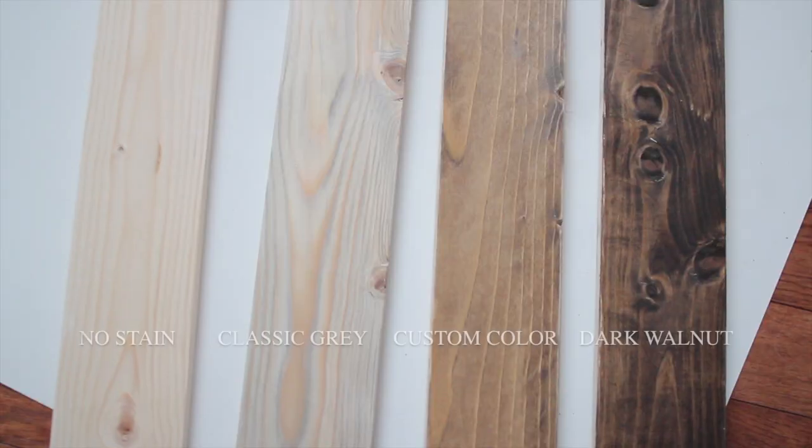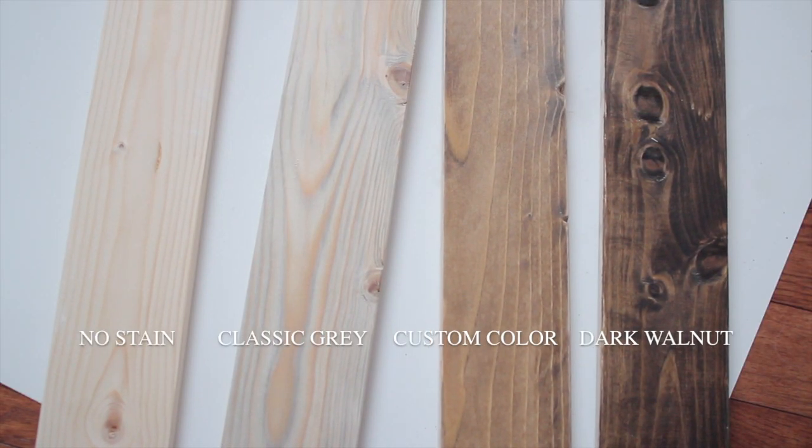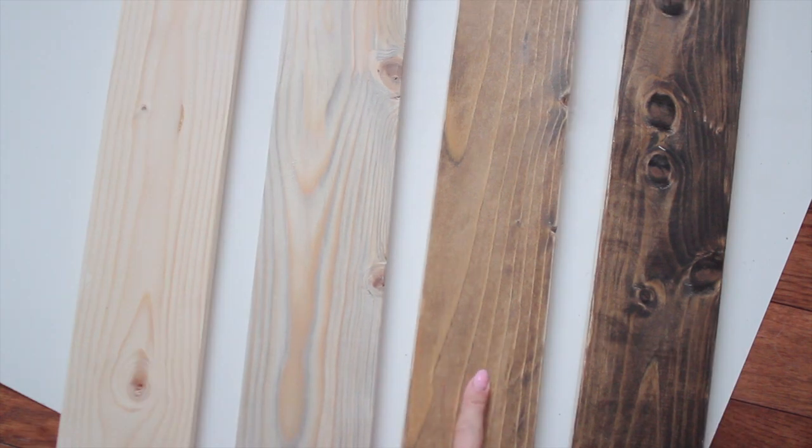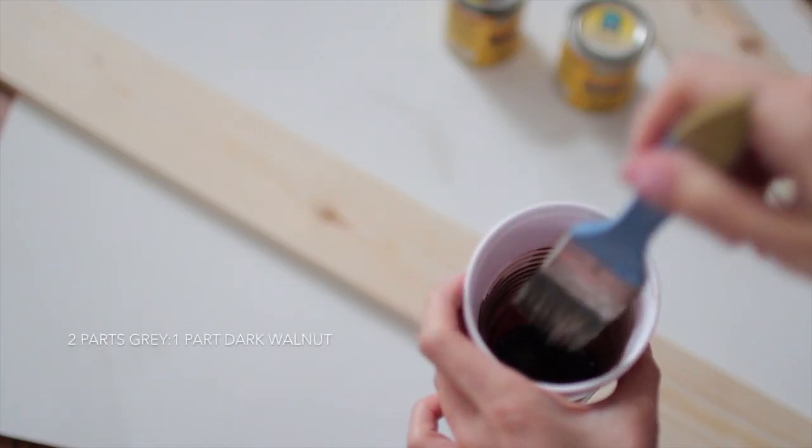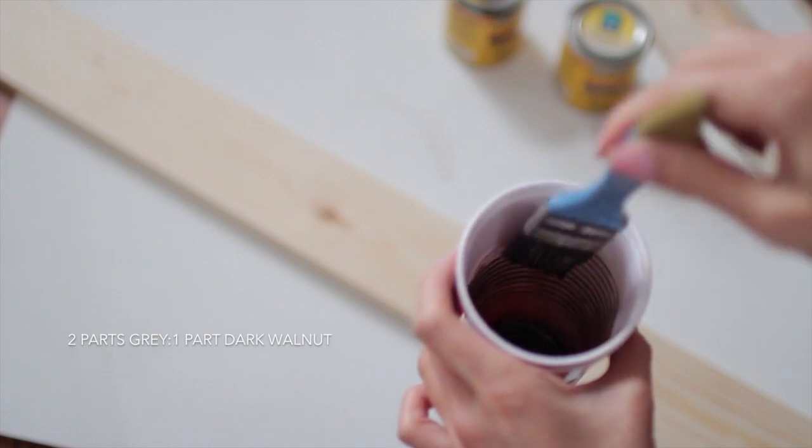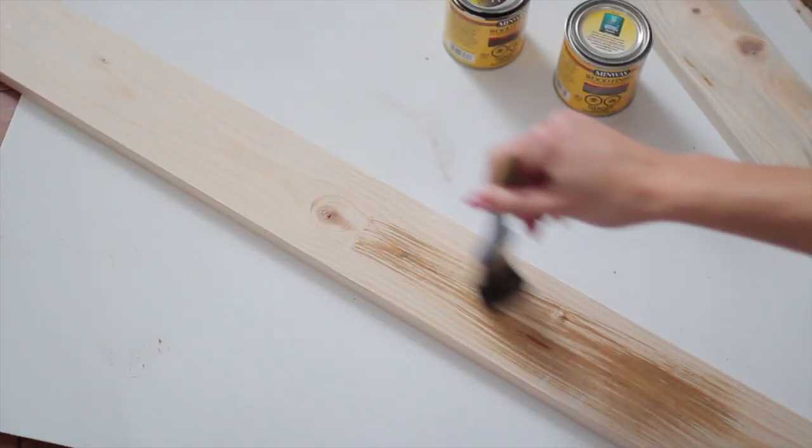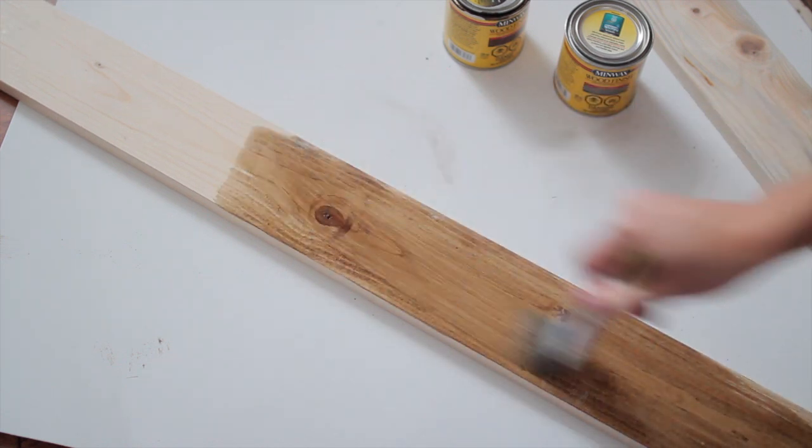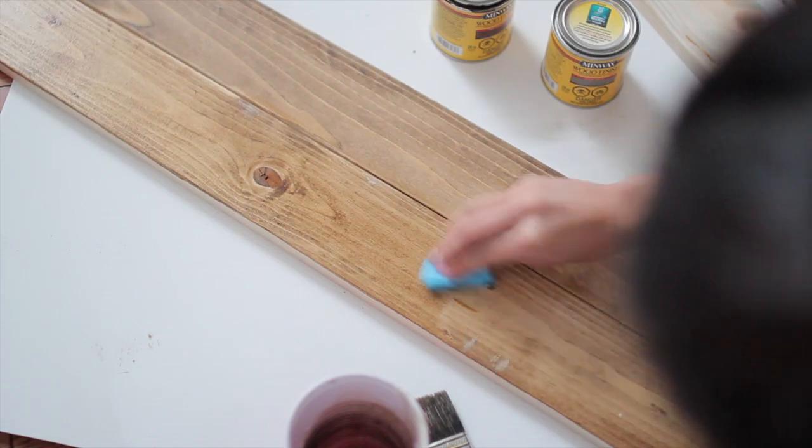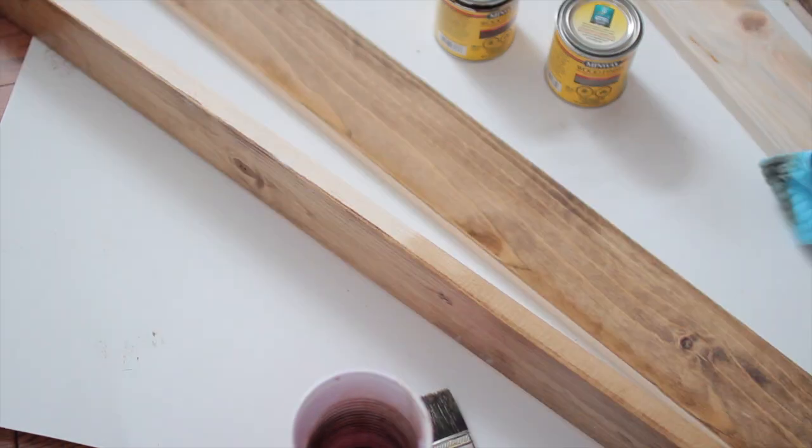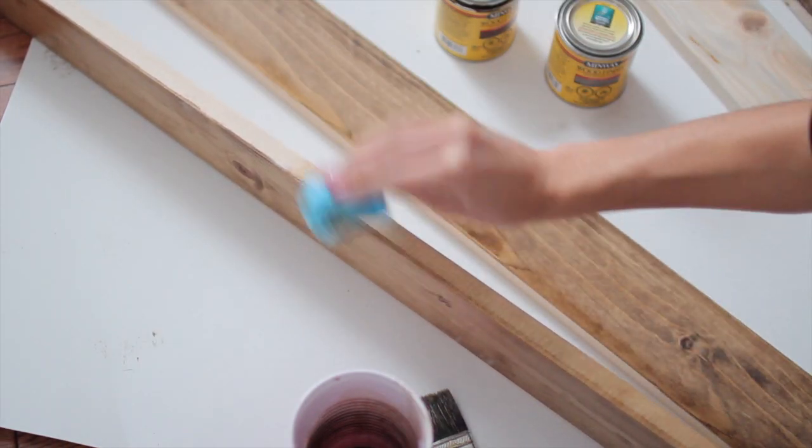After giving those a really good sand, we're going to pick our stain color. I went with a custom color that I did—it's in between light and dark. This is basically two parts gray and one part dark walnut, and I really love how this one looks. I'm only applying one coat of this with a brush, and then we're going to take a cloth and work the stain through that wood so that it actually stains it and not just goes on top.